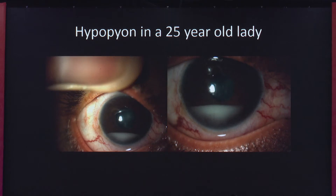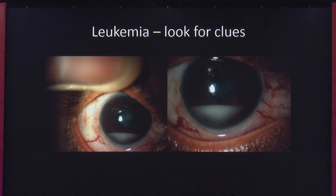Let's start with a common problem we face in the OPD: a patient presenting with hypopyon. This is a 25-year-old lady who presented with bilateral hypopyon. One of the first things we would think of is an endogenous endophthalmitis. But this patient actually had leukemia. So what are the clues — are there any clues to say this is not infective but an underlying more sinister pathology?